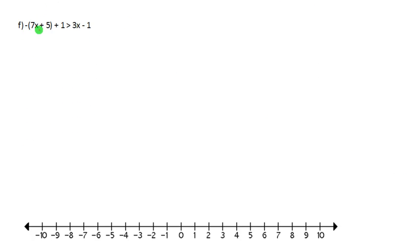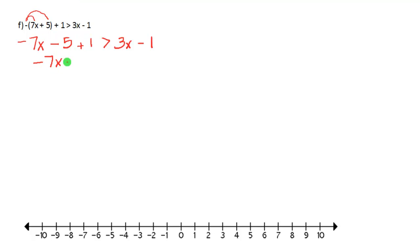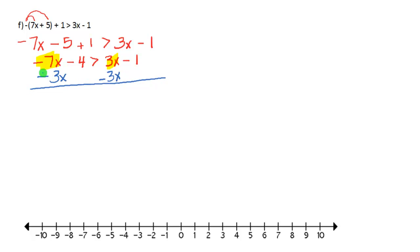For our final problem, we have a parenthesis with a negative sign in front, so we distribute the negative — it's like having a negative 1 — which changes the signs inside: negative 7x minus 5 plus 1 is greater than 3x minus 1. Now combine like terms on the left: negative 7x minus 4 is greater than 3x minus 1. We need to get the x's together on the left side, so subtract 3x — subtracting doesn't change the inequality sign — giving negative 10x minus 4 is greater than negative 1.